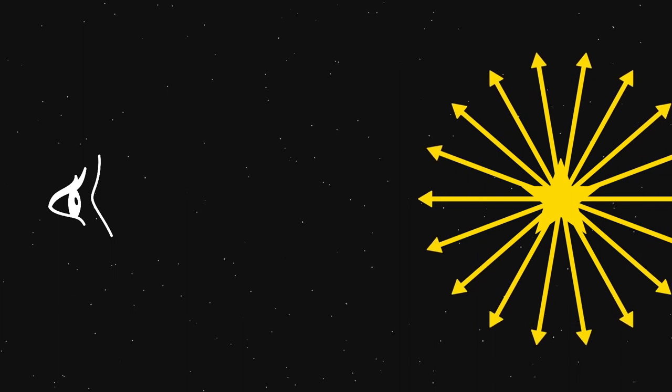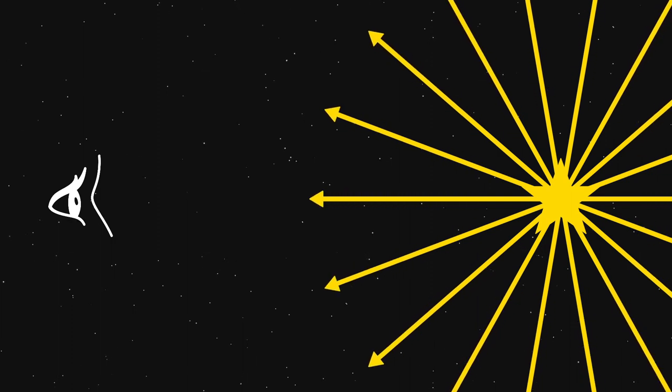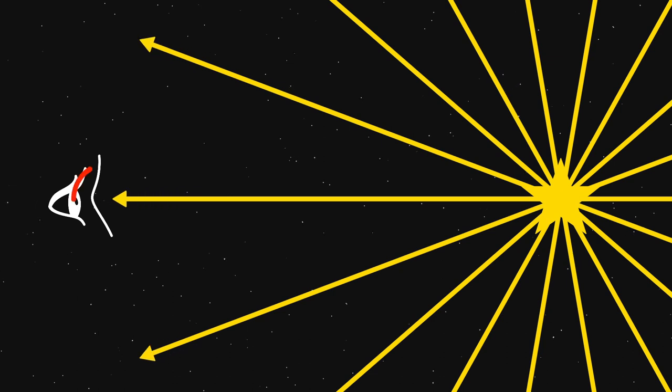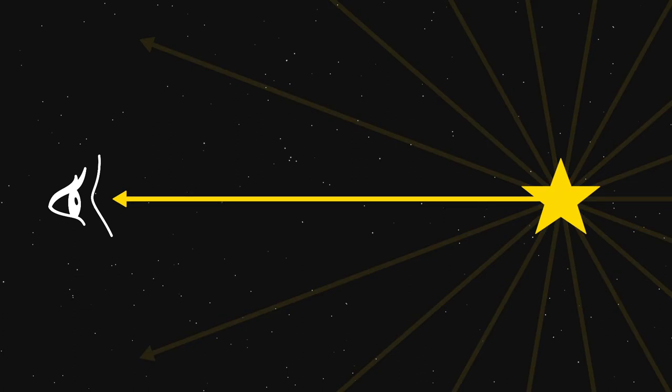a star emits light in all directions, but you can only see it at a point. That's because light has to enter your eye to see it, and only a small amount of the star's light does that. Thus, the light you see follows a very narrow path.